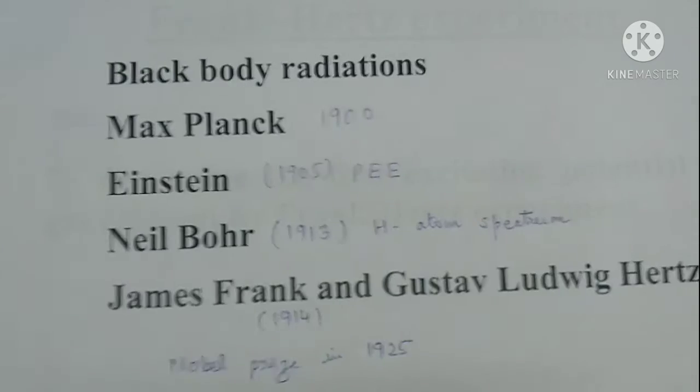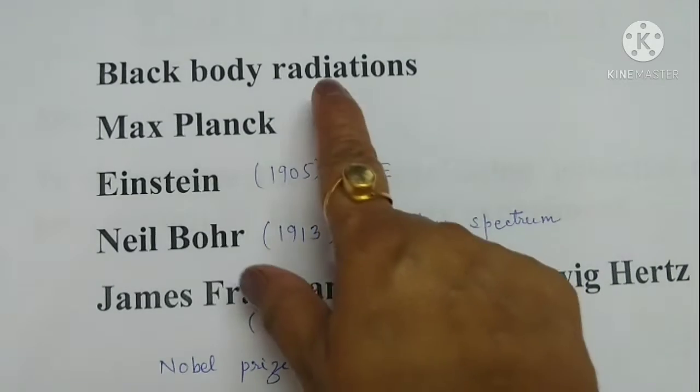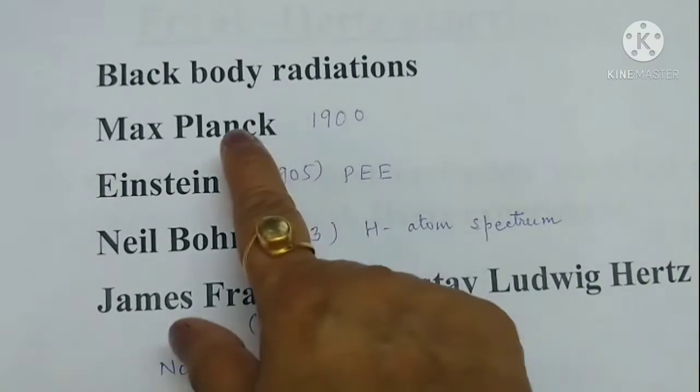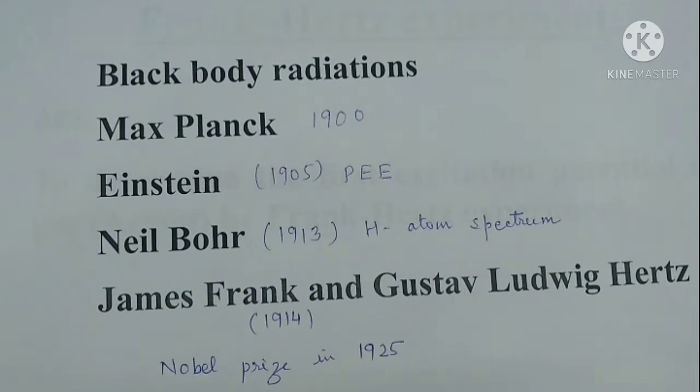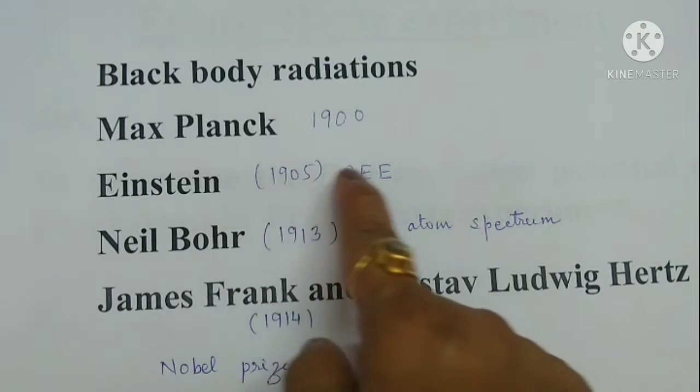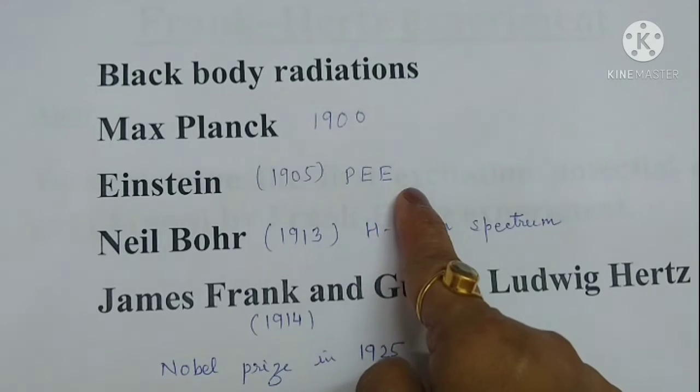While solving the problem of black body radiation in 1900, Max Planck put forward the idea of quantization. He proposed that the exchange of energy between radiation and matter is discrete rather than continuous. Then in 1905, Einstein put forward the photoelectric effect assuming quantization of light.